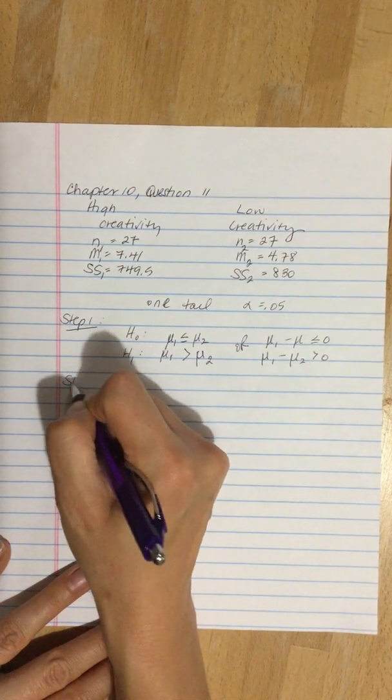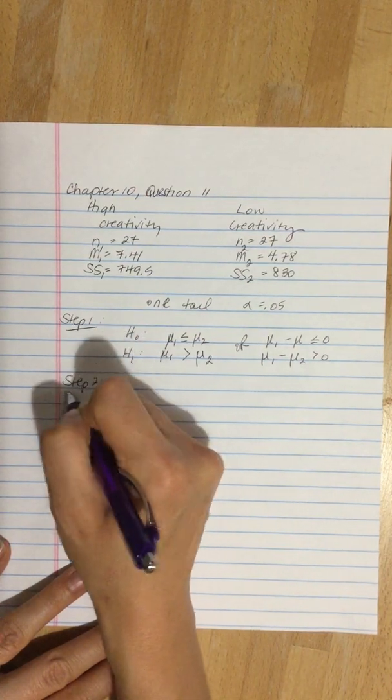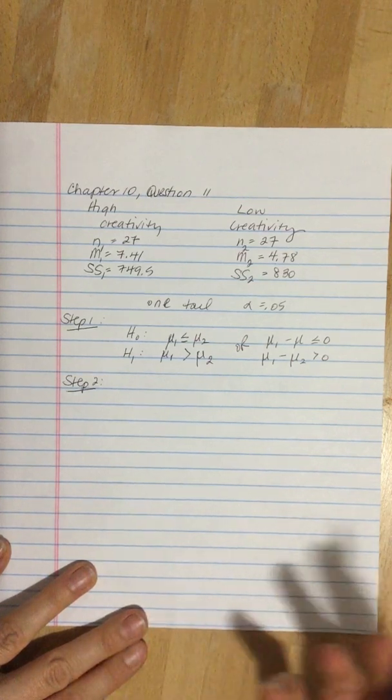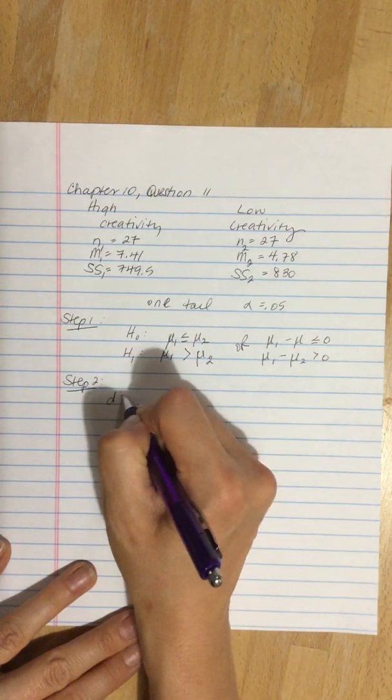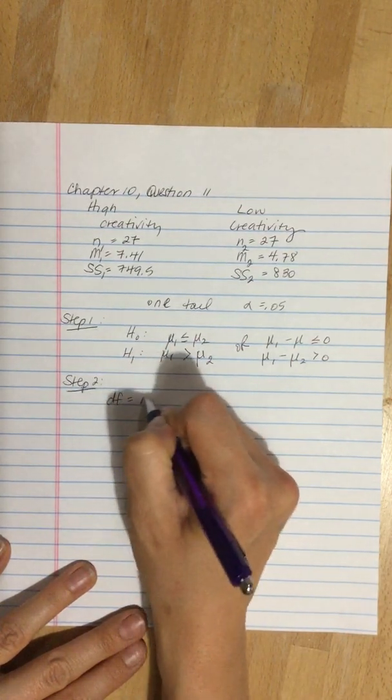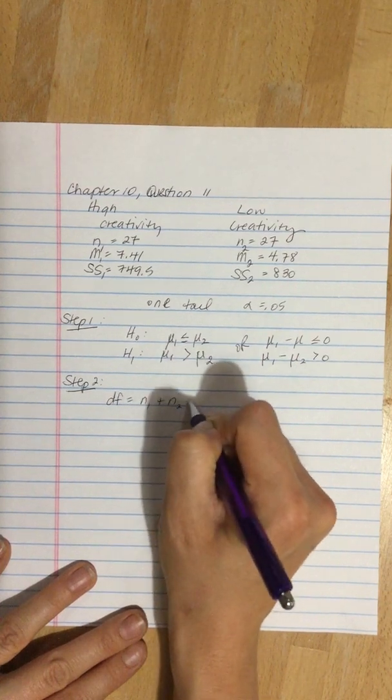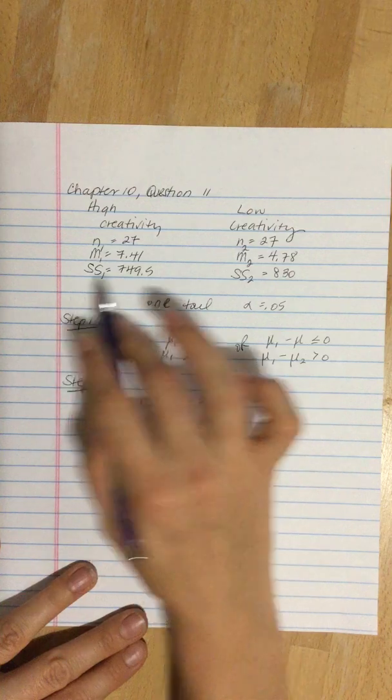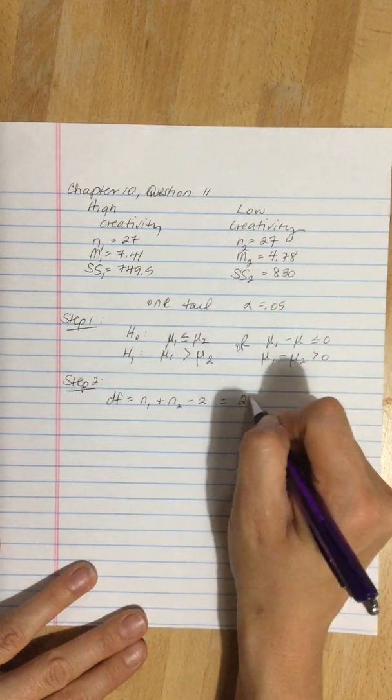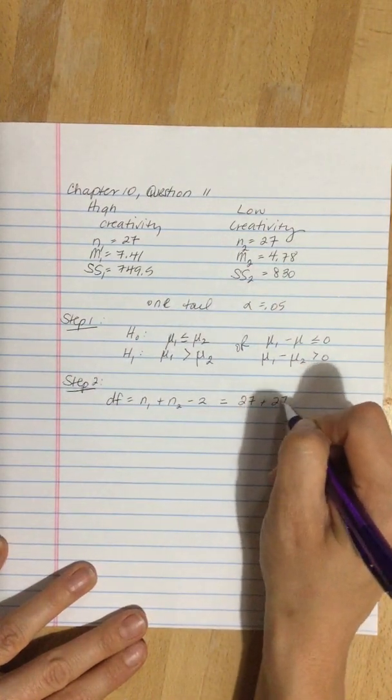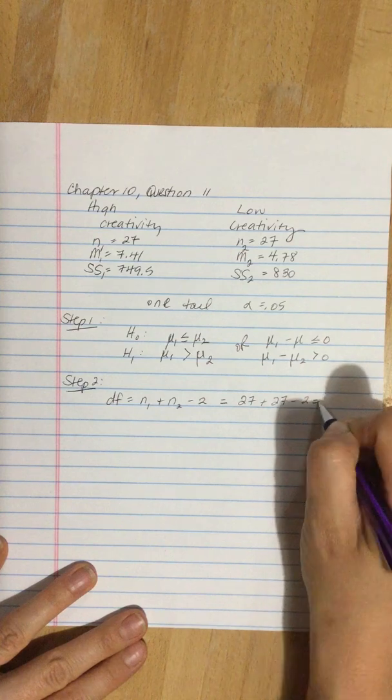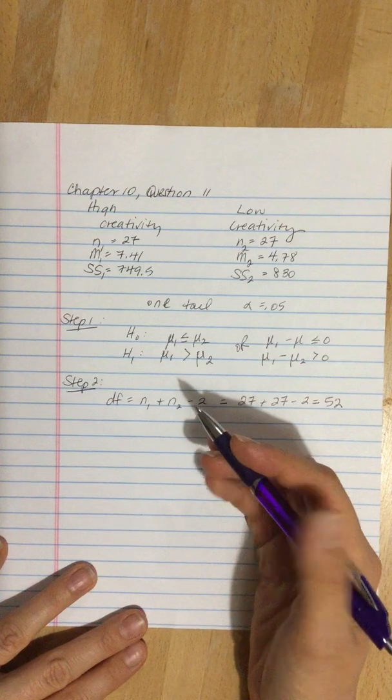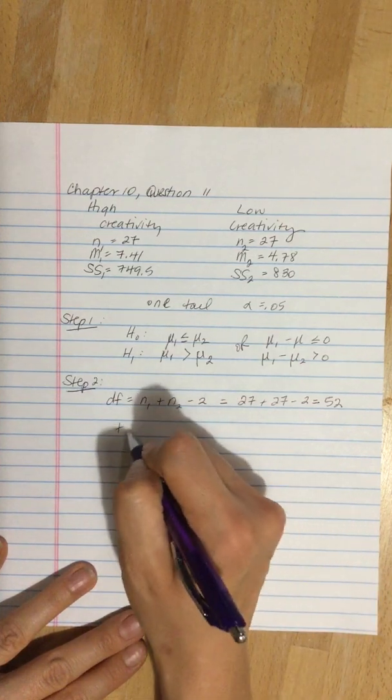Step 2. We need to find our critical values. For that we need to find our degrees of freedom first. So our degrees of freedom is n1 plus n2 subtract 2. 27 plus 27 subtract 2, which is 52.